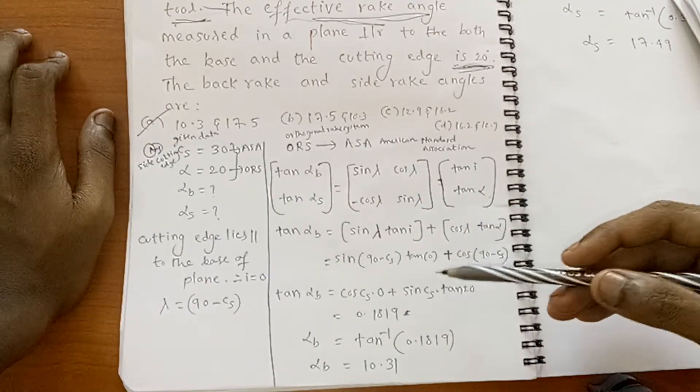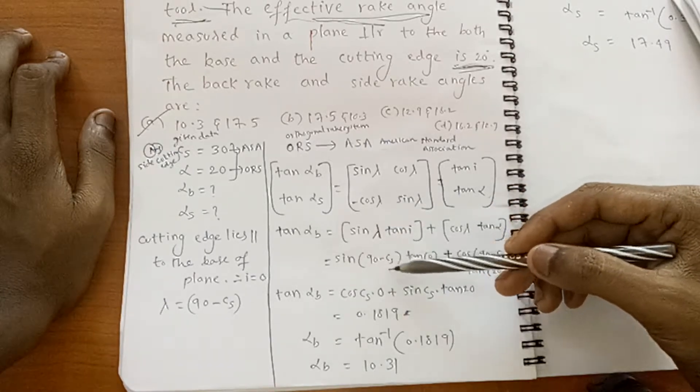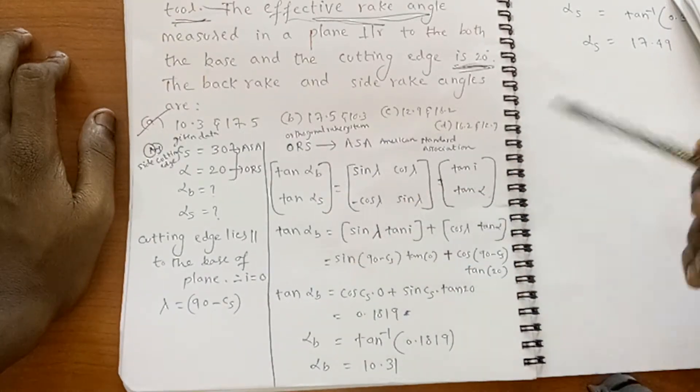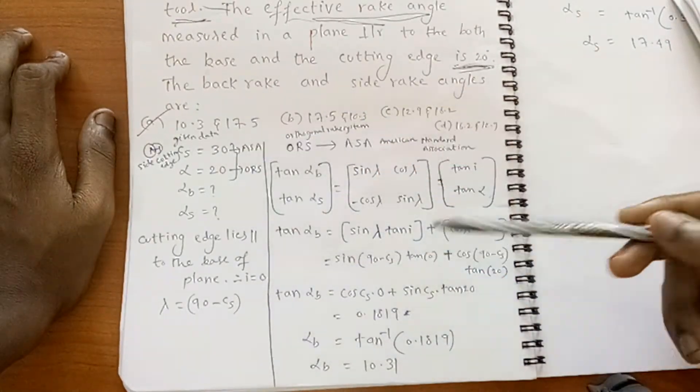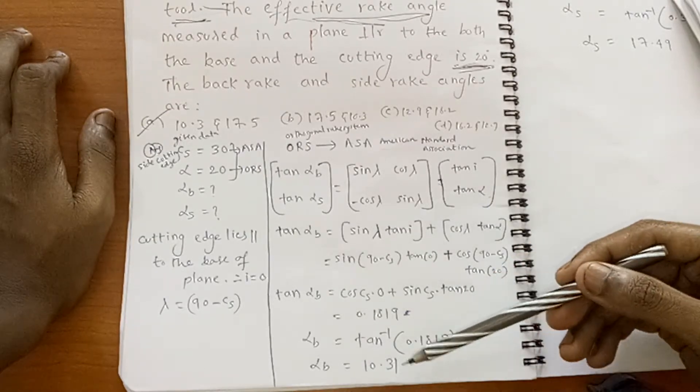Here in the lambda place, if you substitute 90 minus CS, and I means I equal to 0, CS equal to 30 degrees, if you substitute, if you calculate, alpha_B equal to 10.31.